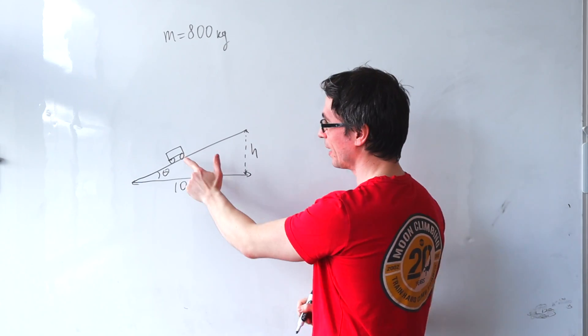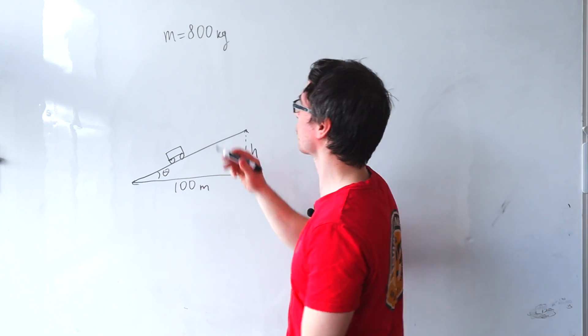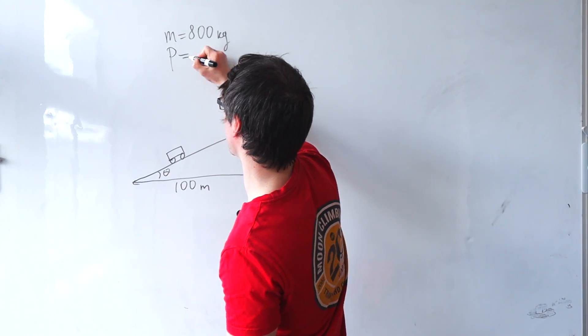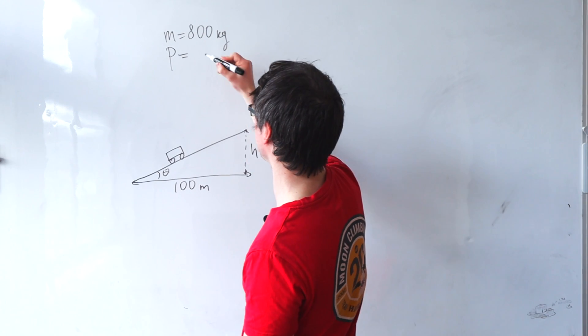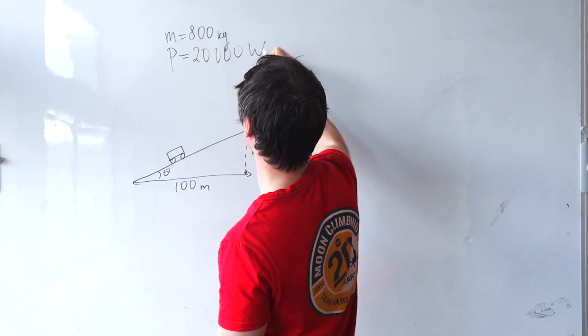That car is providing some engine output to be able to go up the slope. So the power provided by the engine is quite a lot. Let's say 20,000 watts.